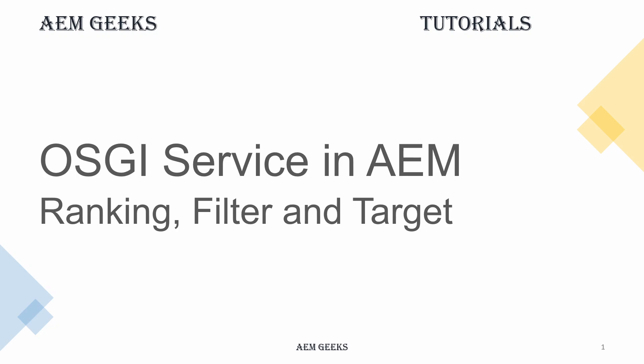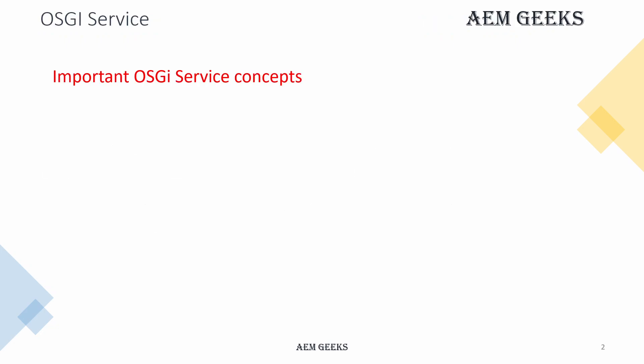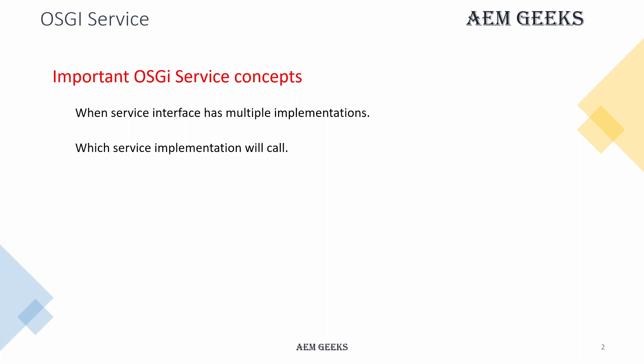In this tutorial I will talk about some more important and advanced concepts about OSGi services. In the previous tutorial I already explained the basics of OSGi service and how to write and call that service in a Sling model as well as in other services or backend components. In this tutorial I will cover: when you have more than one implementation class of a service interface, we'll see that scenario and how the service will behave when you call it.